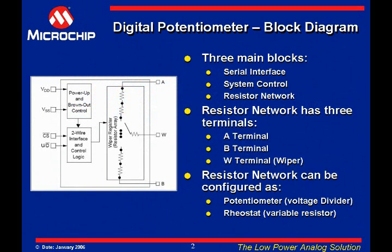The resistor network has three terminals, and the connection network can be used in one of two application configurations: as a potentiometer, also thought of as a voltage divider, and a rheostat, also thought of as a variable resistor.